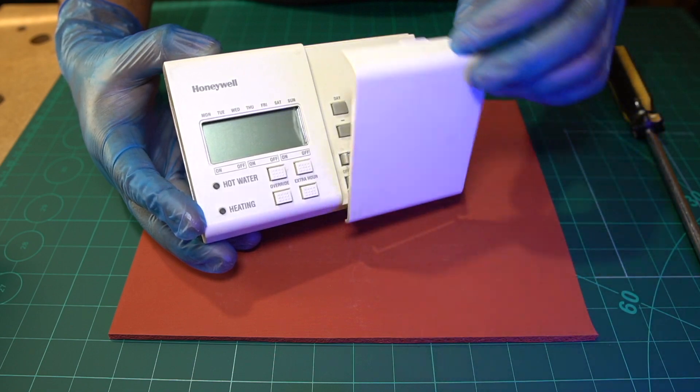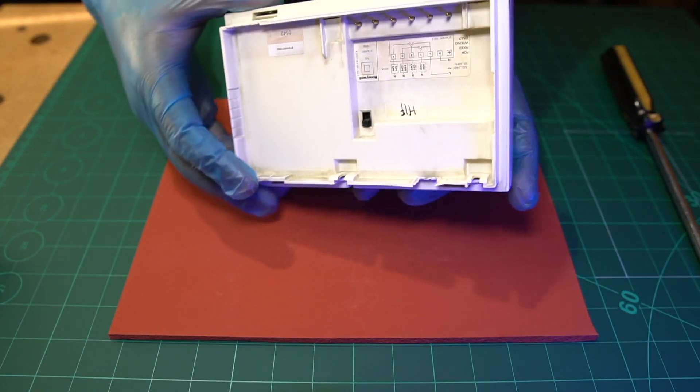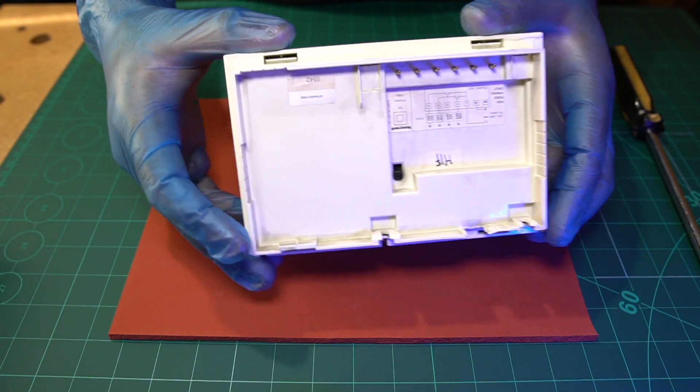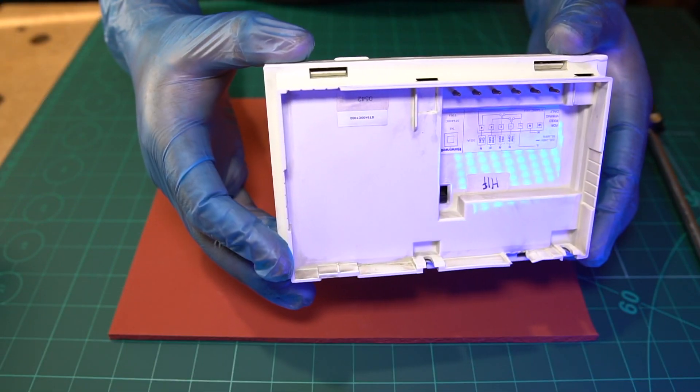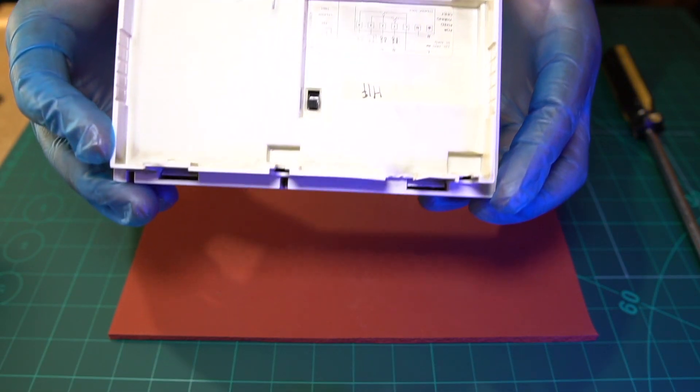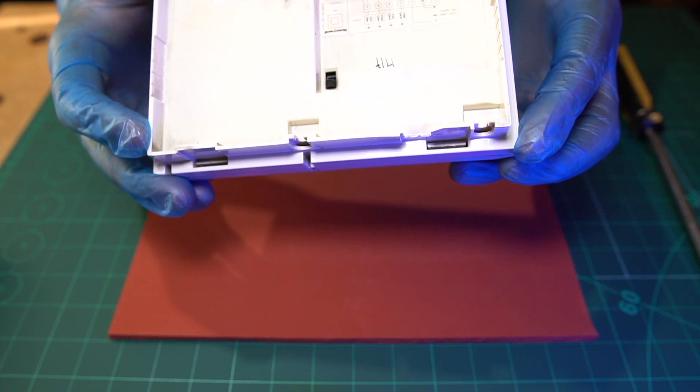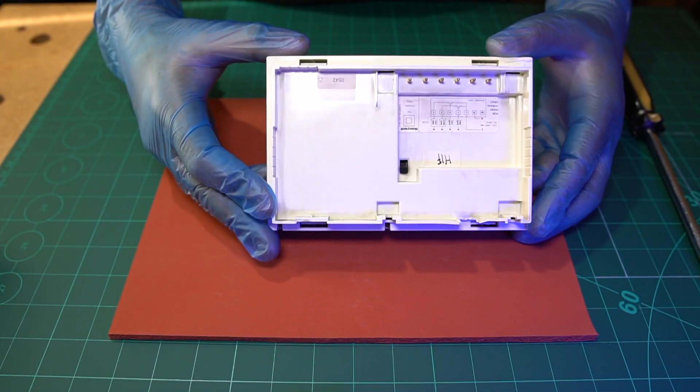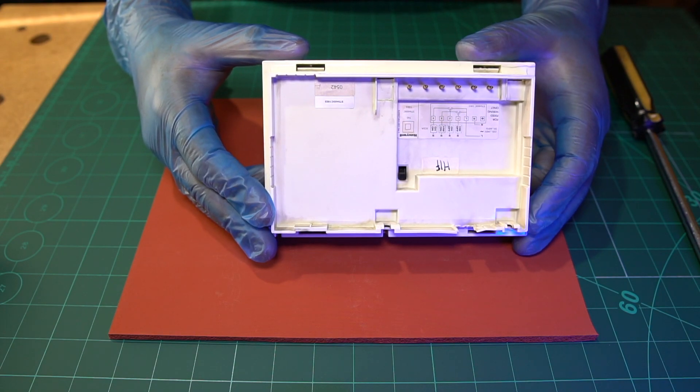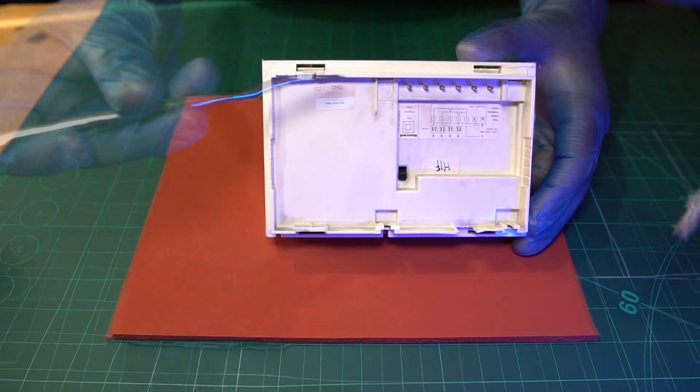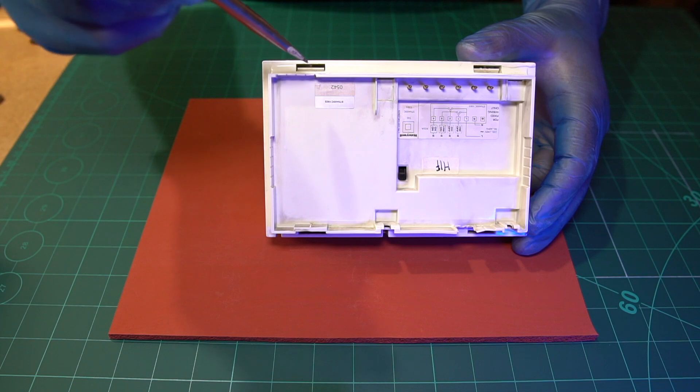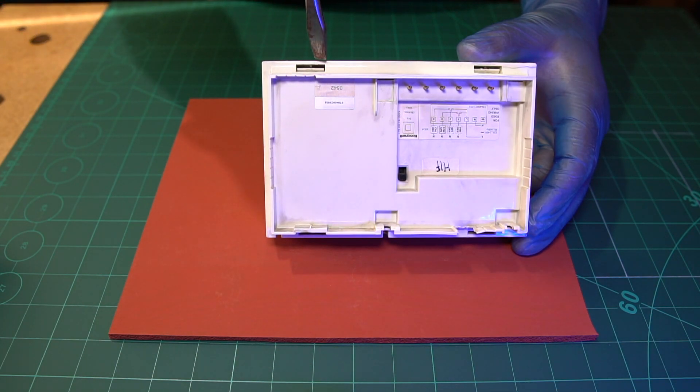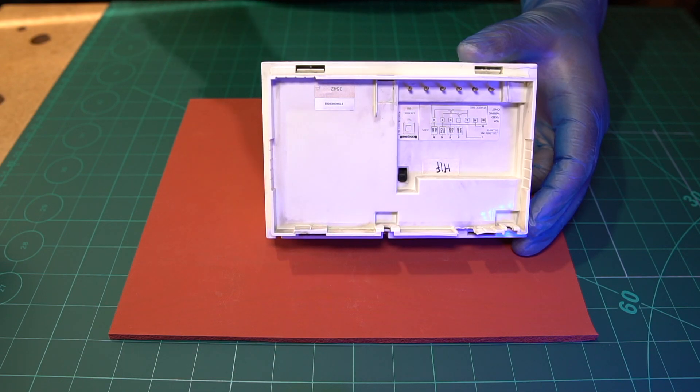So what we're going to do is, we're going to turn it around, and if you have a look here, you've got four tabs. One tab here, one tab here, one here on this side, and then one here on this side. You need to remove those tabs, and the way you do it is you get your screwdriver, you wedge it in here, and you pop these out from the bottom. So I'm going to do these four, and then we'll have a closer look inside.